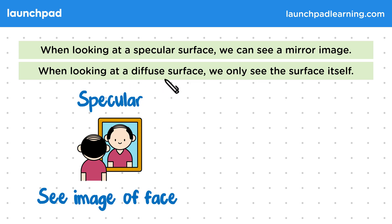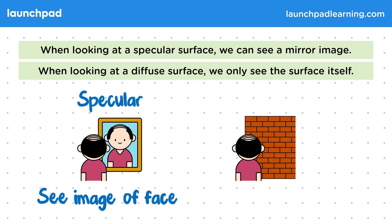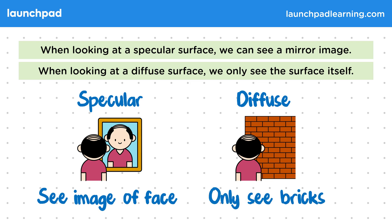On the other hand, when looking at a diffuse surface, we only see the surface itself. A brick wall is an example of a diffuse surface. Although the bricks are roughly cuboid in shape, there are lots of bumps and imperfections on their surface. This causes light to reflect off it in all directions. This reflection means an image can't form from the reflected rays — these rays instead tell us information about the surface, so we only see the bricks.